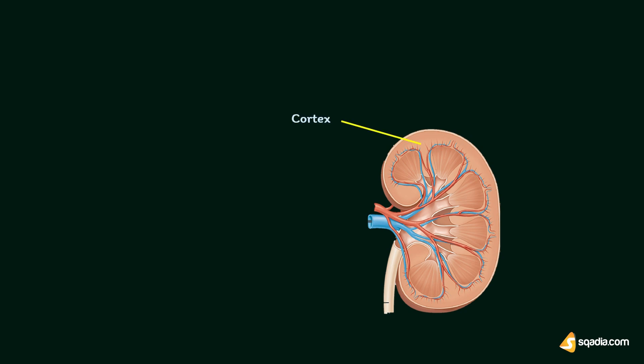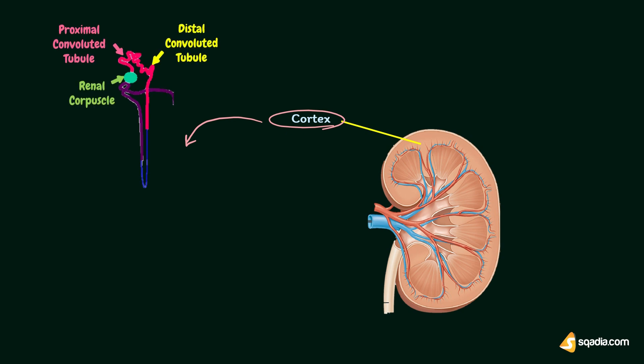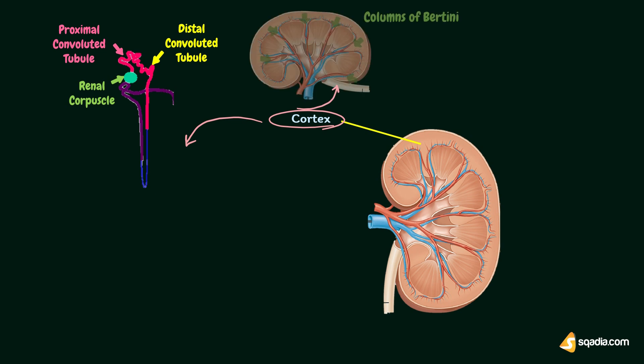Outer cortex is dark and granular in appearance. It contains renal corpuscles and convoluted tubules. At intervals, cortical tissue penetrates medulla in the form of columns, which are called renal columns or columns of Bertini. This will be explained in detail later in this video.